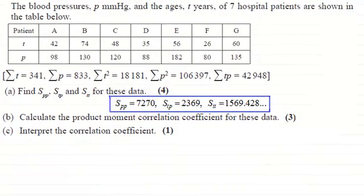Hi there. Now for parts B and C we've got to calculate the product moment correlation coefficient for these data. That's for three marks and then in part C interpret the correlation coefficient for one mark.